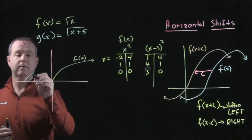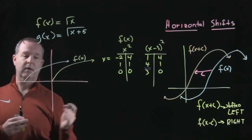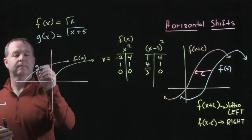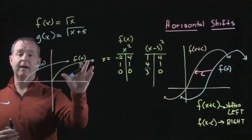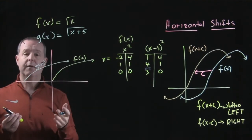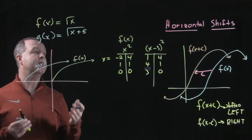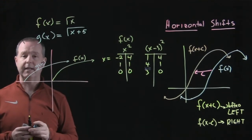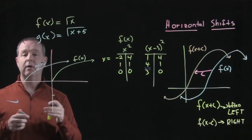And then the graph will continue in that fashion where it's this entire function shifted to the left five units. So there's a little bit of an idea of how we can use horizontal shifting to obtain another like graph.